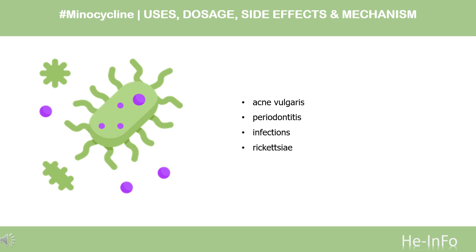Oral and intravenous formulations are indicated to treat infections of susceptible microorganisms. These include Rickettsia, Mycoplasma pneumoniae, Chlamydia trachomatis, Chlamydophilus cetaceae, Ureaplasma urealyticum, Borrelia recurrentis, Haemophilus ducreyi, Yersinia pestis, Francisella tularensis, Vibrio cholerae, Campylobacter fetus, Brucella species, Bartonella bacilliformis, Klebsiella granulomatis, Escherichia coli, Enterobacter aerogenes, Shigella species, Acinetobacter species, Haemophilus influenzae, and Klebsiella species.